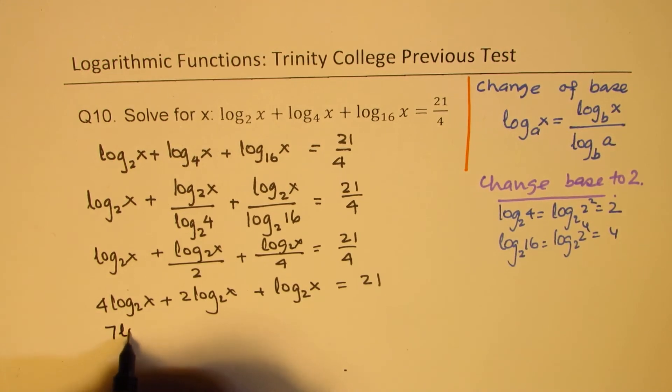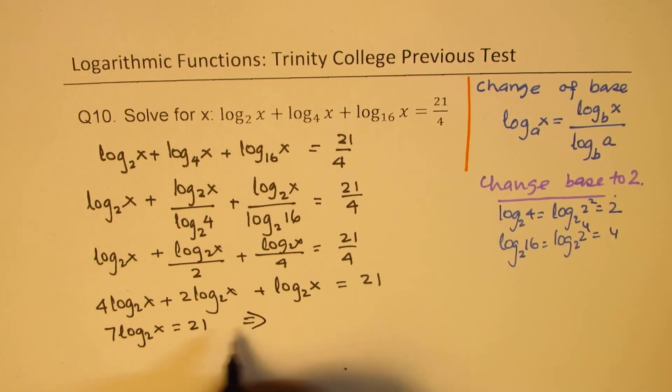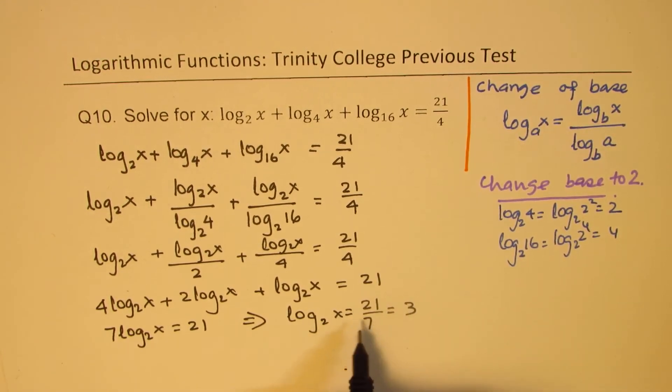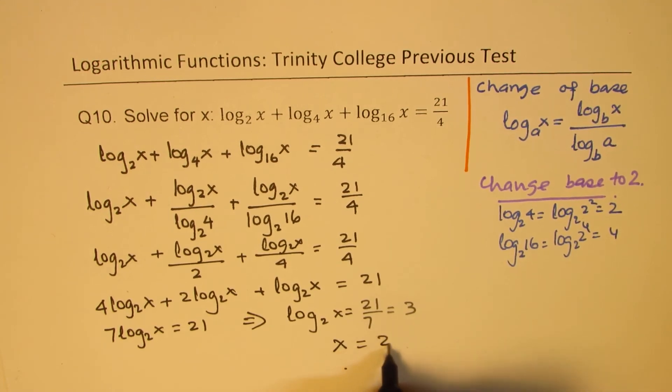So we have 4 plus 2, 6 plus 1, 7. So we can write 7log₂(x) = 21. So this gives you that log₂(x) = 21/7 or 3. So now writing it in the index form, we can write x = 2³ which is 8.